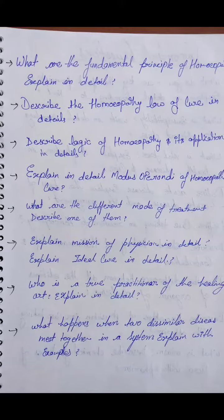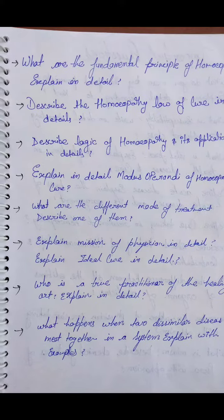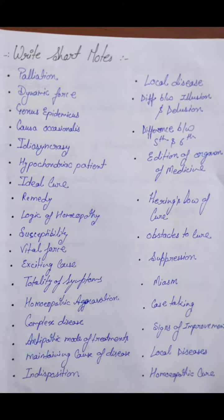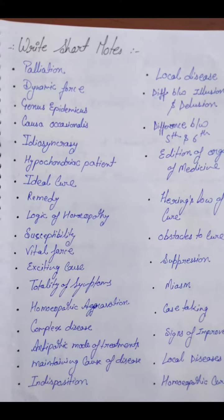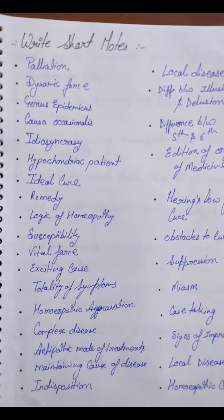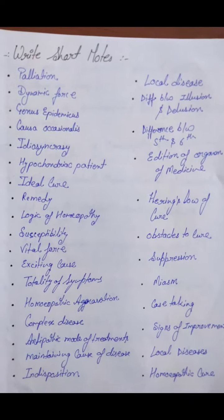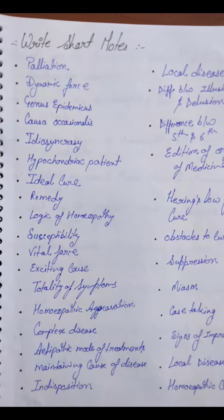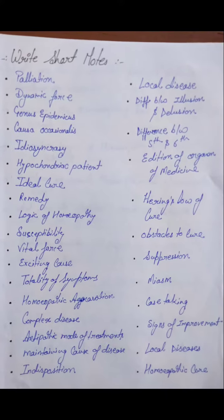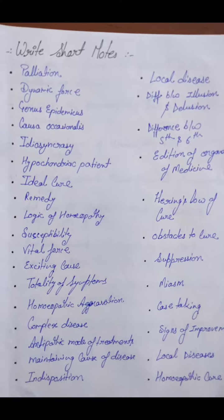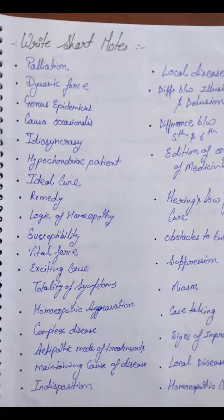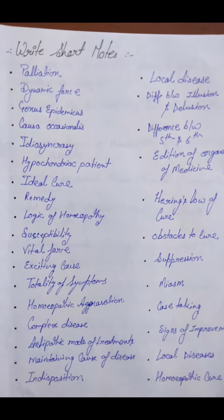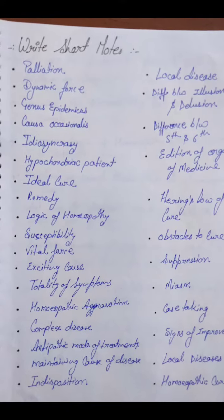Now look at the short questions. These are the most important short topics. You will cover all of these: Palliation, Dynamic forces, Genus epidemicus, Causa occasionalis, Idiosyncrasy, Hypochondriac patient, Ideal cure, Remedy.